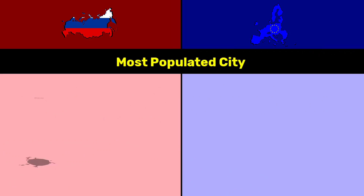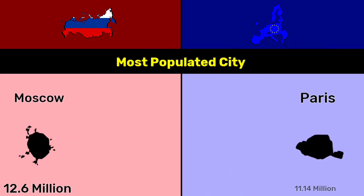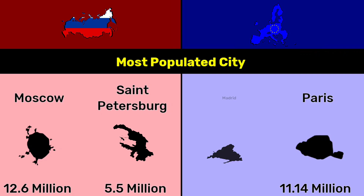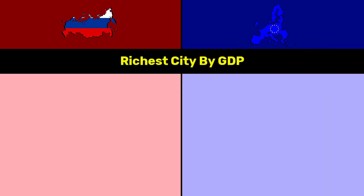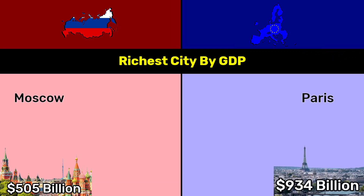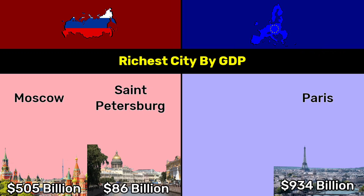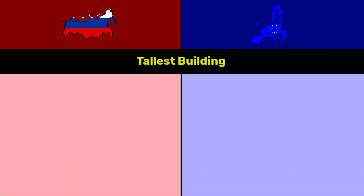Most populated city: Russia — Moscow at 12.6 million; EU — Paris at 11.14 million. Saint Petersburg at 5.5 million versus Madrid at 6.7 million. Richest city by GDP: Moscow at 505 billion dollars versus Paris at 934 billion dollars. Saint Petersburg at 86 billion dollars versus Randstad/Rhine-Ruhr at 636 billion dollars.